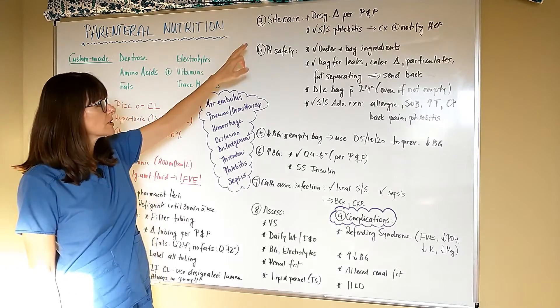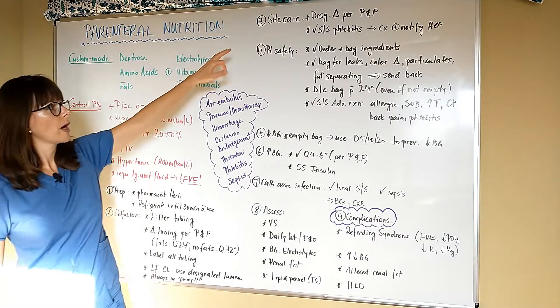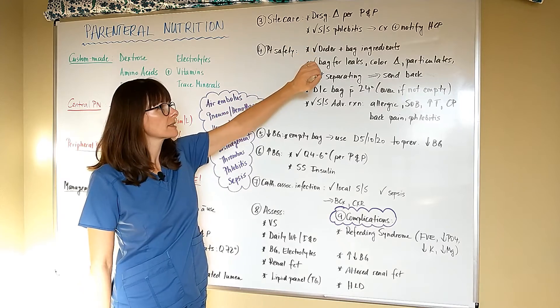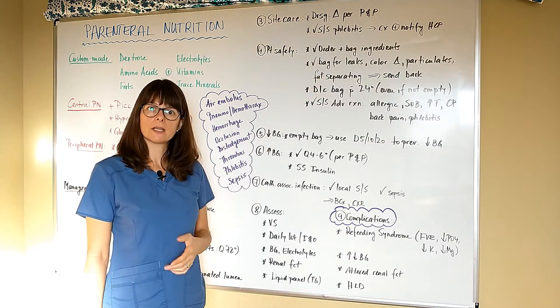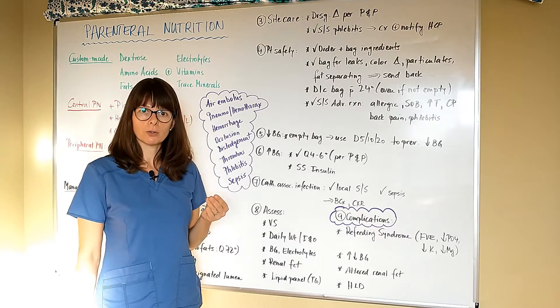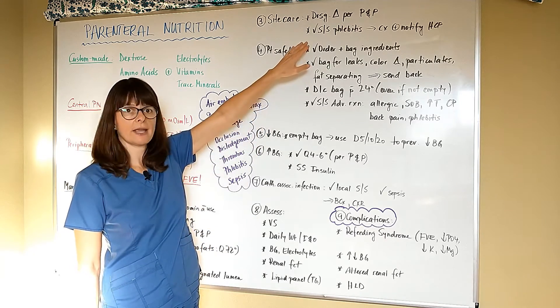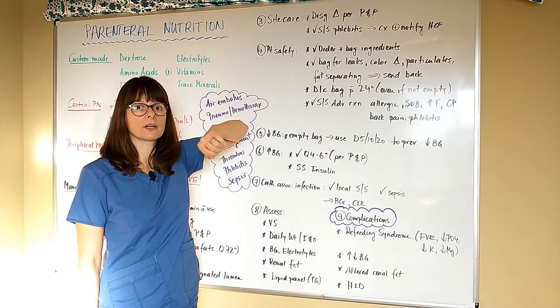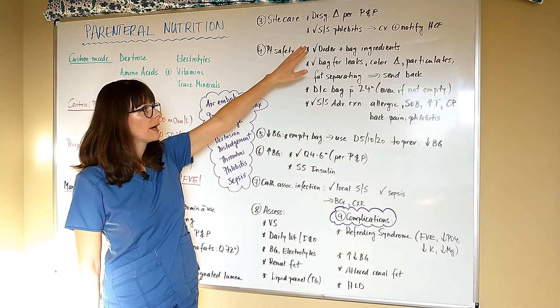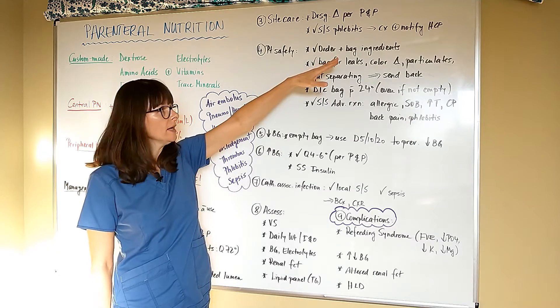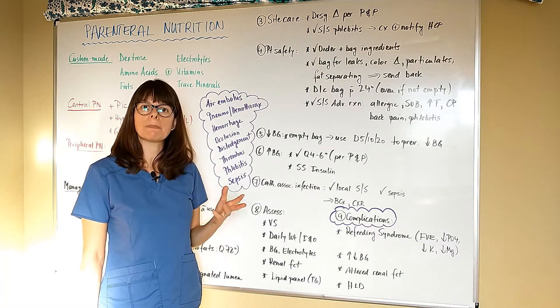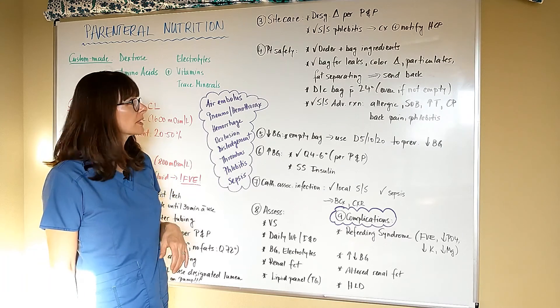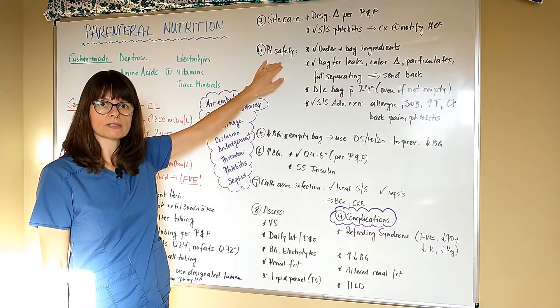For site care, because we're dealing mostly with a central line here, we always have to perform dressing changes according to the policy and procedure. Always check for signs and symptoms of phlebitis. These are redness, swelling, pain, edema, those kind of things. Whenever there is a smaller vein involved, it's definitely a higher risk for phlebitis. If you're suspecting phlebitis, definitely culture the site right away and notify the healthcare provider. They may or may not want to discontinue that line and start another one depending on the patient's special circumstances. Patient safety is always our number one concern.